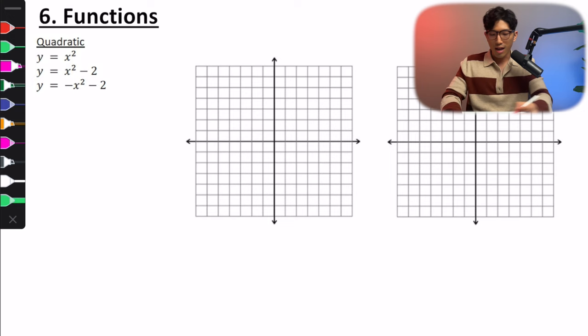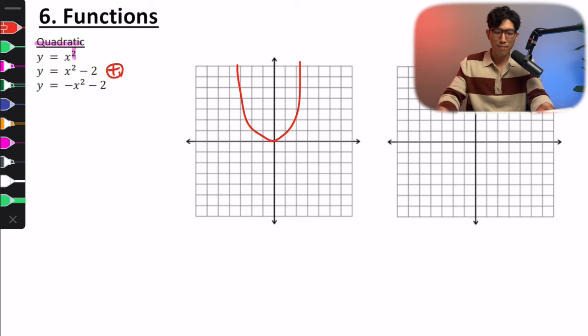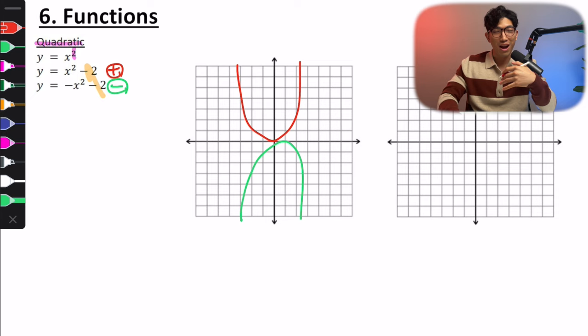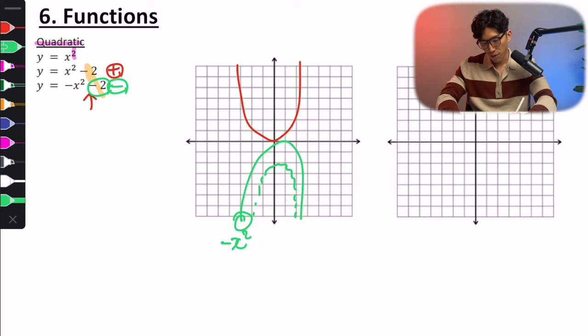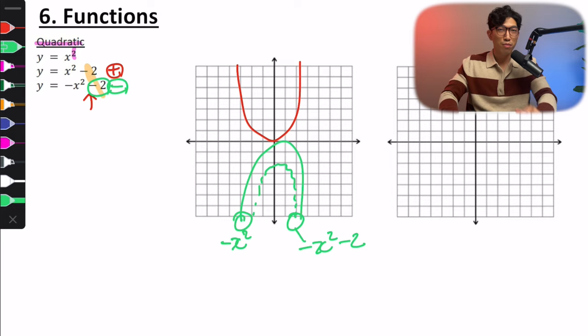For a quadratic function, if the leading coefficient is positive it's a smiley face (opens upward), and if it's negative it's a frowny face (opens downward). There are also vertical translations: a constant added or subtracted outside the squared term moves the graph up or down. For example, minus x squared minus 2 shifts the graph of minus x squared down by 2 units.